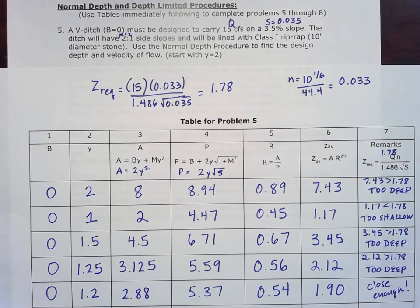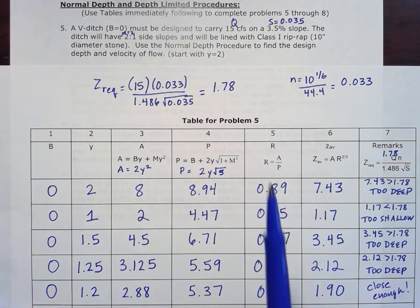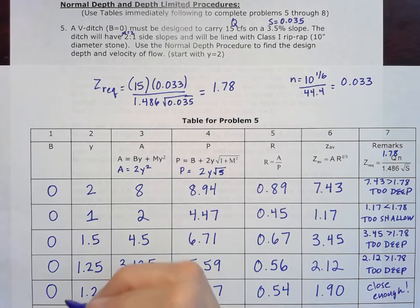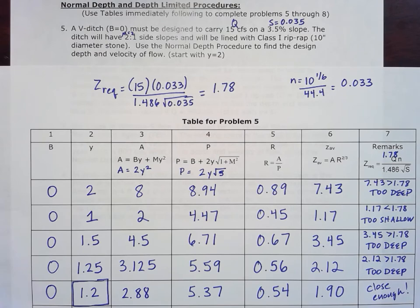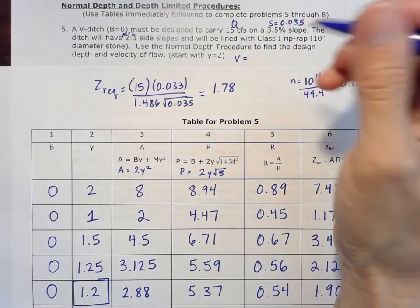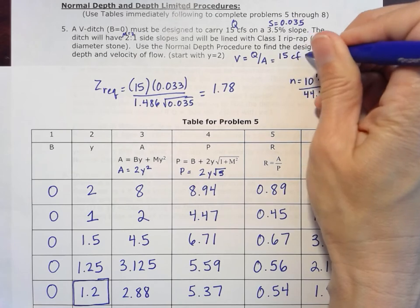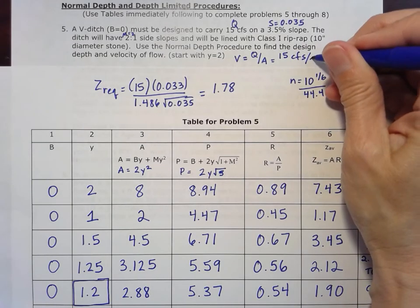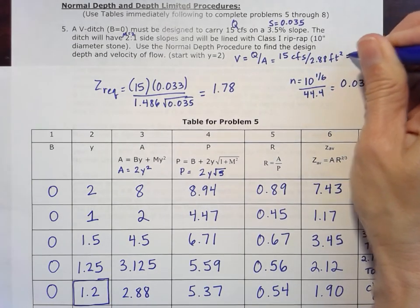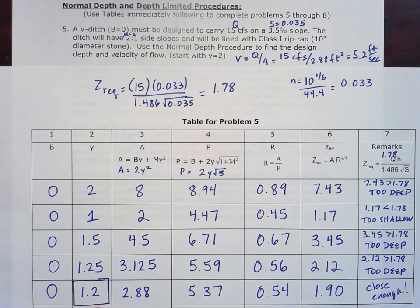On tests or exams, you will be told the number of iterations to do. I just want to see that you're going in the right direction. Let's look at what they're asking here for: use the normal depth procedure to find the design depth. So we're going to use the design depth of 1.2 feet and then the velocity of flow. To find that velocity of flow, we're just going to take that Q and divide it by the area. Our Q we started with, given that 15 cubic feet per second, and the area we can pick off our table here, 2.88 feet squared for that depth. That gives us a velocity of 5.2 feet per second at the 1.2 foot depth.